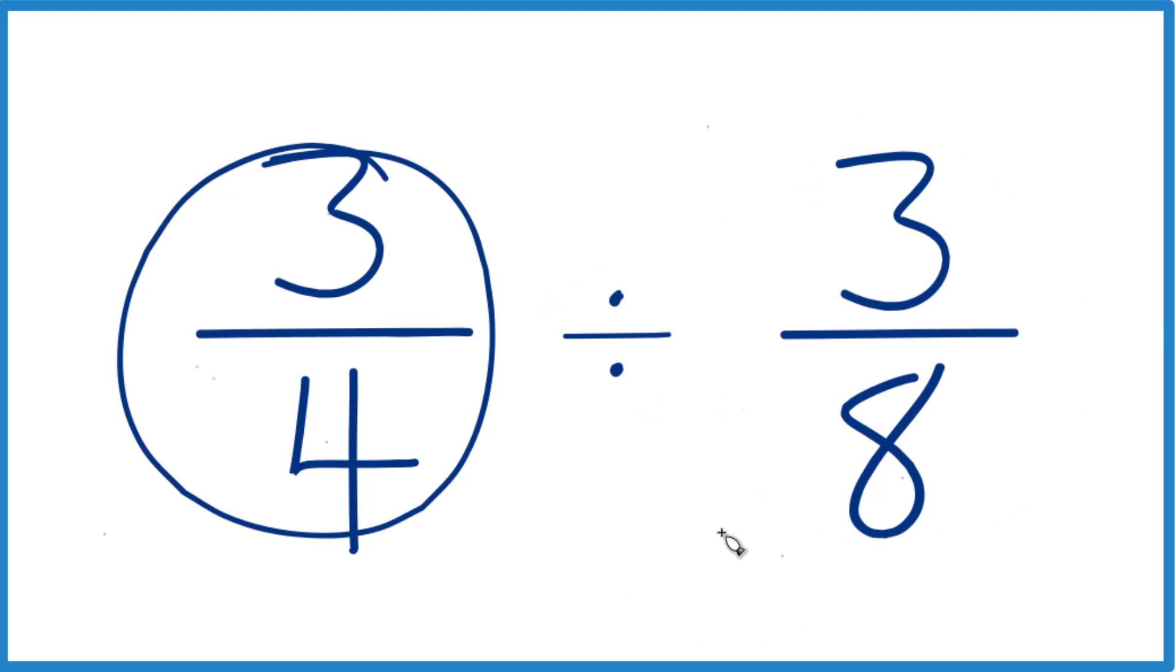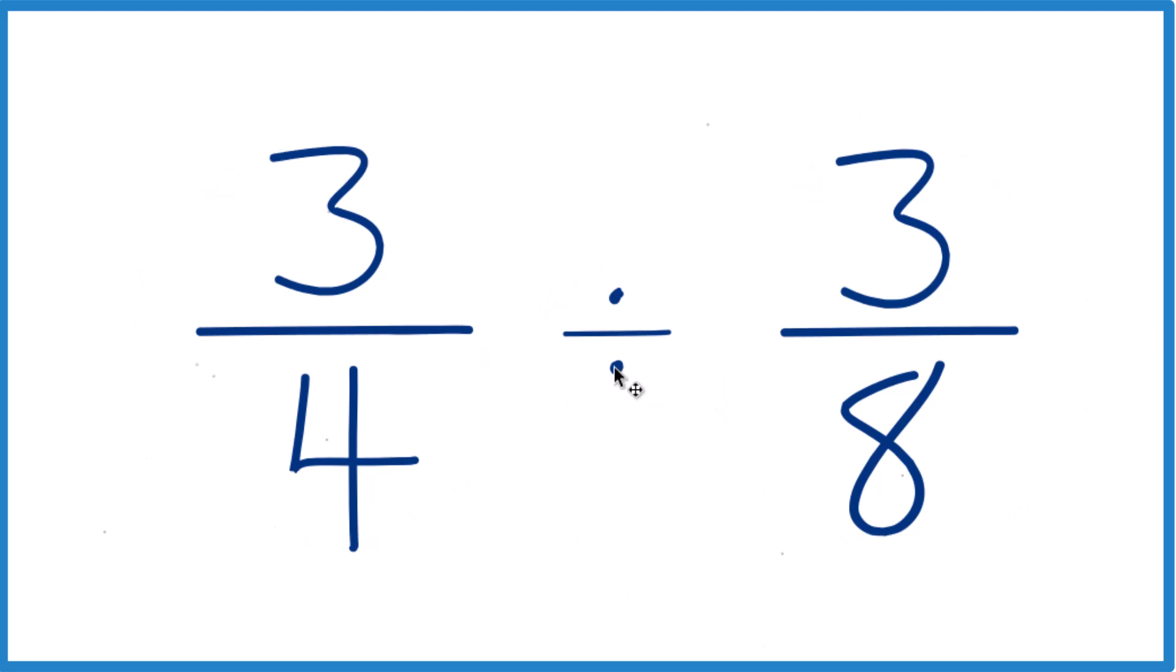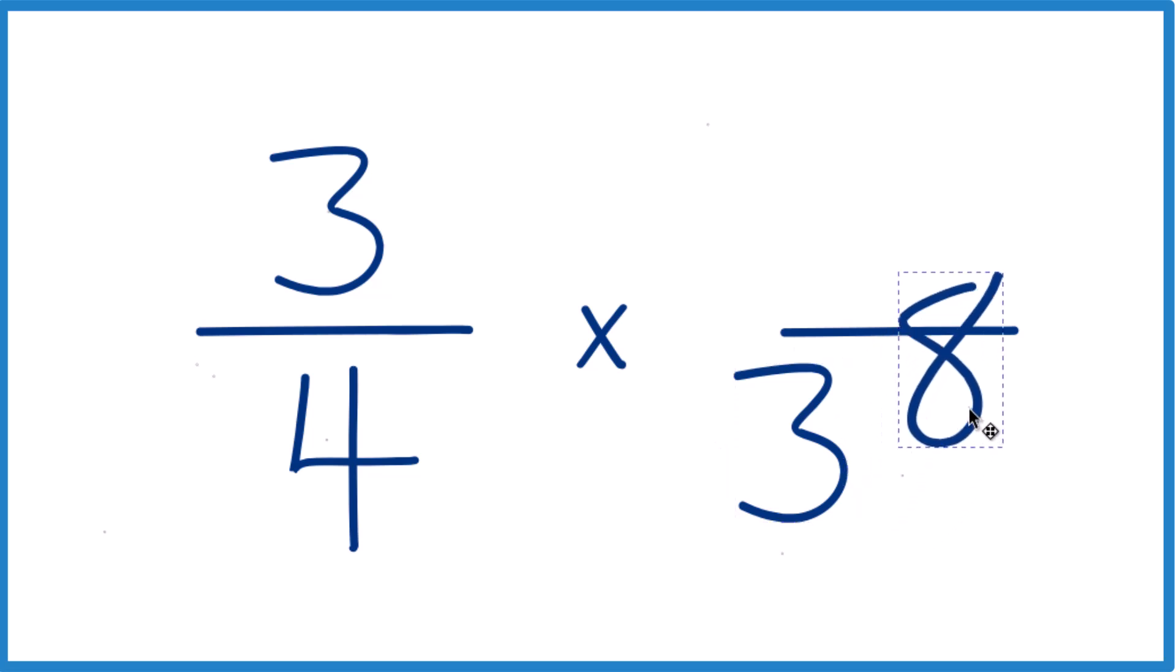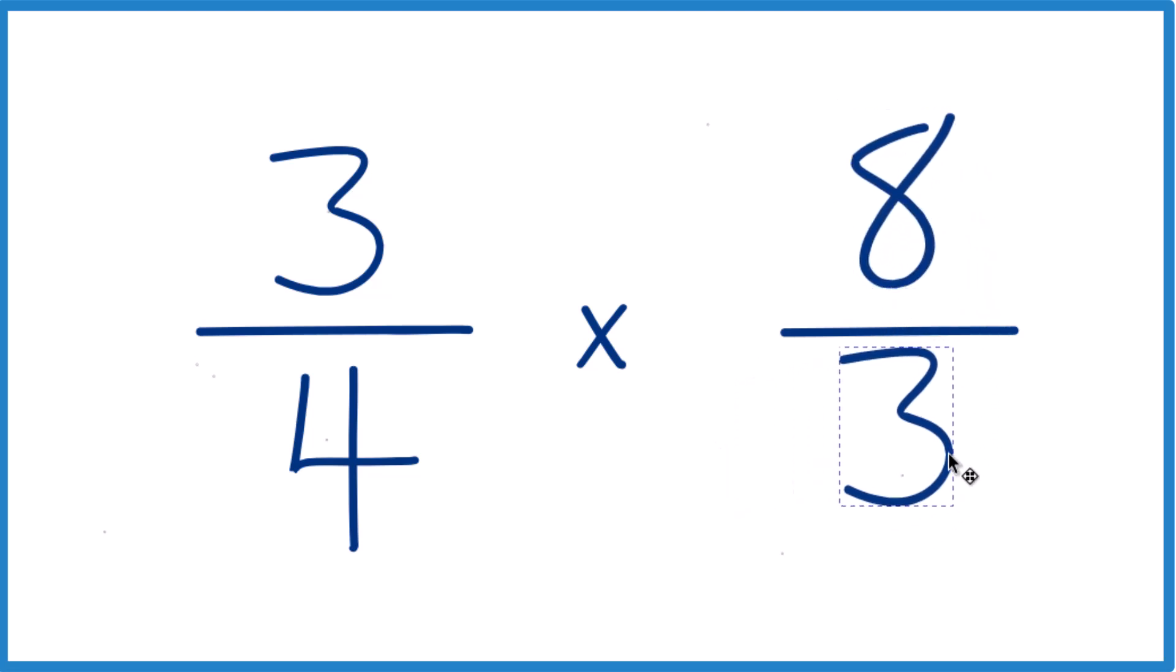Probably the easiest way to do this is instead of division, let's think of it as multiplication. So we're going to take 3 fourths, instead of divided by 3 eighths, we're going to take the reciprocal of 3 eighths, so we move the 3 down here and the 8 up here, and that's how you take the reciprocal.